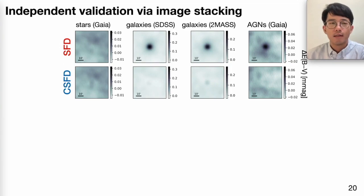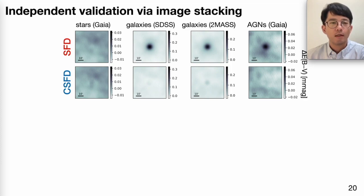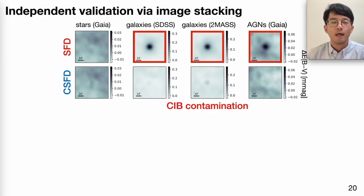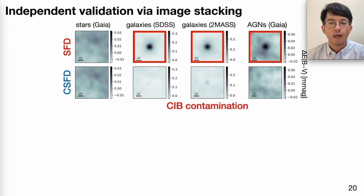To validate that the CIB cleaning is effective, I use some external data. Here I show image stacks on the E(B-V) values in SFD (top row) and CSFD (bottom row). From left to right, the centers of the stacked images are: Gaia stars, SDSS galaxies, 2MASS galaxies, and Gaia AGN. All three samples on the right are extragalactic objects, and you can see that these objects are significantly detected in SFD — confirming strong CIB contamination. These contaminations are mostly gone in the new CSFD map.